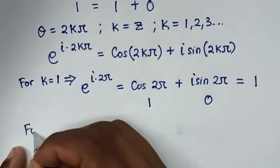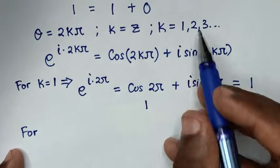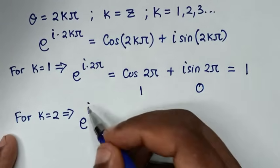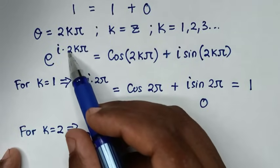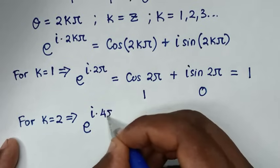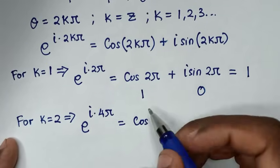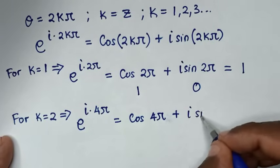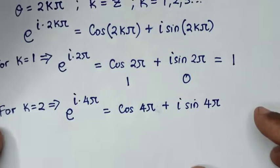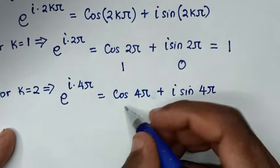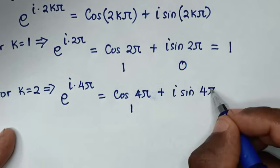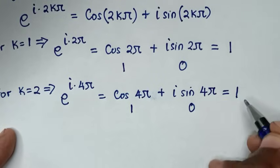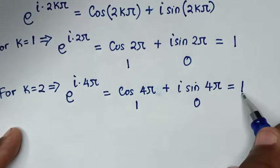We already checked k = 1, so now we check k = 2. For k = 2: e to the power of i·4π equals cos(4π) plus i·sin(4π). Cos(4π) is 1, sin(4π) is 0, so 0 times i is 0. Therefore 1 plus 0 equals 1.